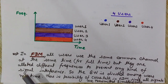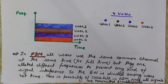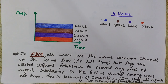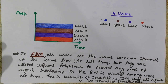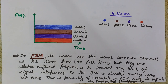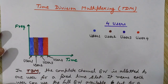There is a possibility of crosstalk in FDM because all users transmit signals at the same time. However, this is not the case with time division multiplexing. In TDM, users are allotted only specific time slots in which they are allowed to transmit their signals, but they are given the full bandwidth for their time slot.